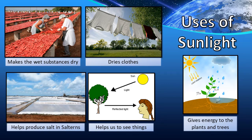The sun plays a major role in our day-to-day life — we cannot live without the sun. Sunlight helps make wet substances like grapes and fish dry. The sun evaporates water from wet clothes and dries them, and helps produce salt. The sun also gives energy to plants and trees to produce fruits and vegetables through photosynthesis. The sun also helps us to see things.